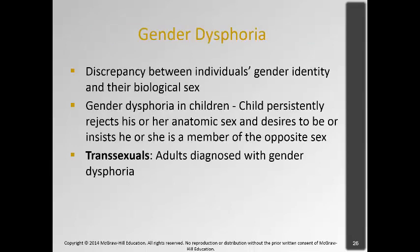Now moving on to gender dysphoria. This is when there's a discrepancy between the individual's gender identity — their belief of who they are — and their biological sex. So someone has male genitalia but feels like a woman, or vice versa. There's a lot of controversy about gender dysphoria in children, where kids reject their anatomical sex or insist they are a member of the opposite sex. This is different from a tomboy or a little boy wanting to play dress-up — this is when the child truly and persistently asserts a different gender identity.